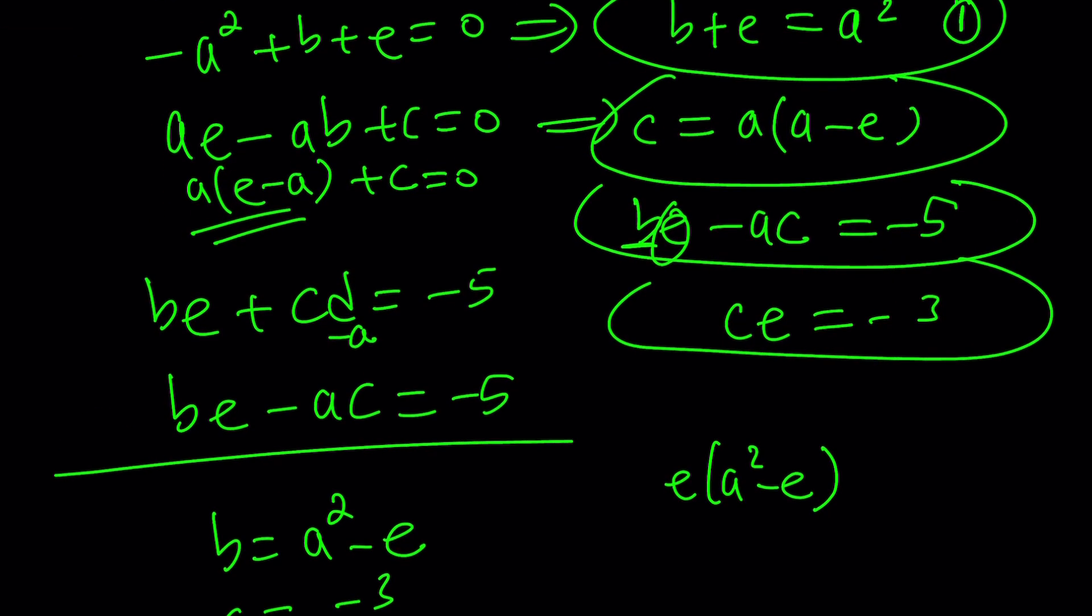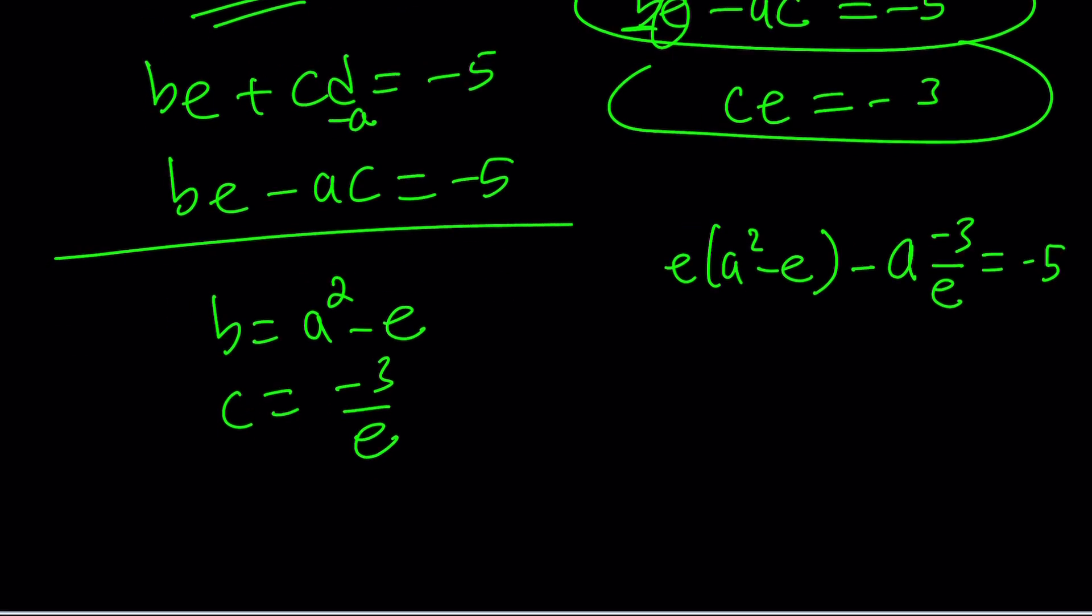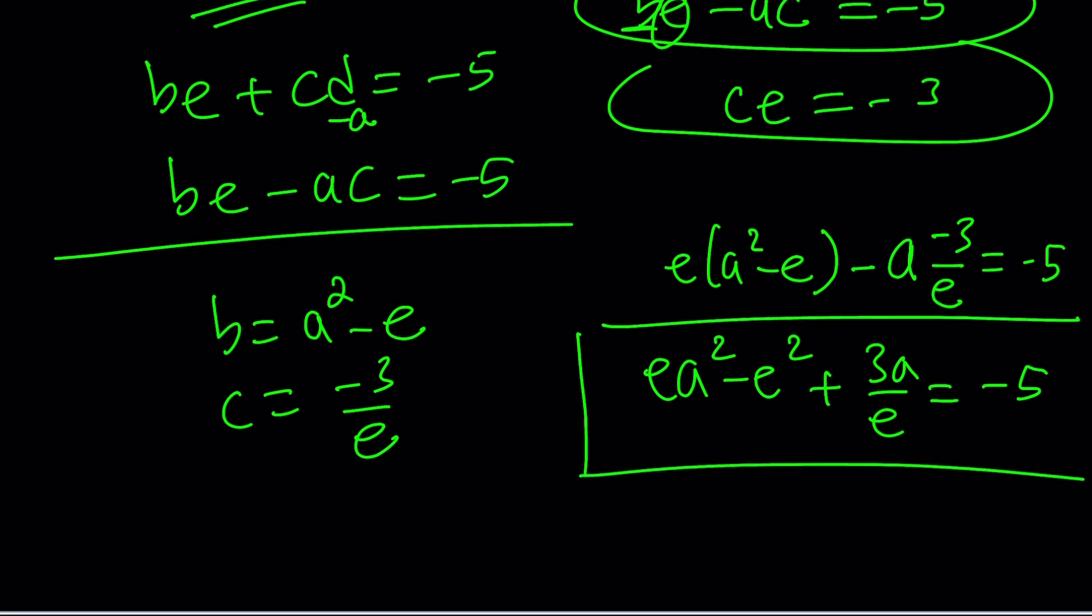So let's see. I replaced b with that. And which equation did I use? be minus ac. The next one is going to be ac, but I'm going to write it as a times negative 3 over e. And that's going to equal negative 5. Let's simplify this a little bit. See what that gives us. ea squared minus e squared plus 3a over e equals negative 5. This problem can give us something square or cubic, whatever. But let's save it for now.